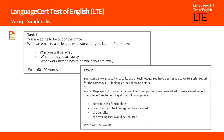The second task provides candidates with two topic options. The first option asks them to imagine that their company wants to increase its use of technology. Candidates are asked to write a brief report for the company's CEO and refer to four points: the company's current uses of technology, how the use of technology can be extended, the benefits for the company, and the training that will be required. The second option simply differs as regards who wants to increase the use of technology — candidates imagine it's their college rather than a company.